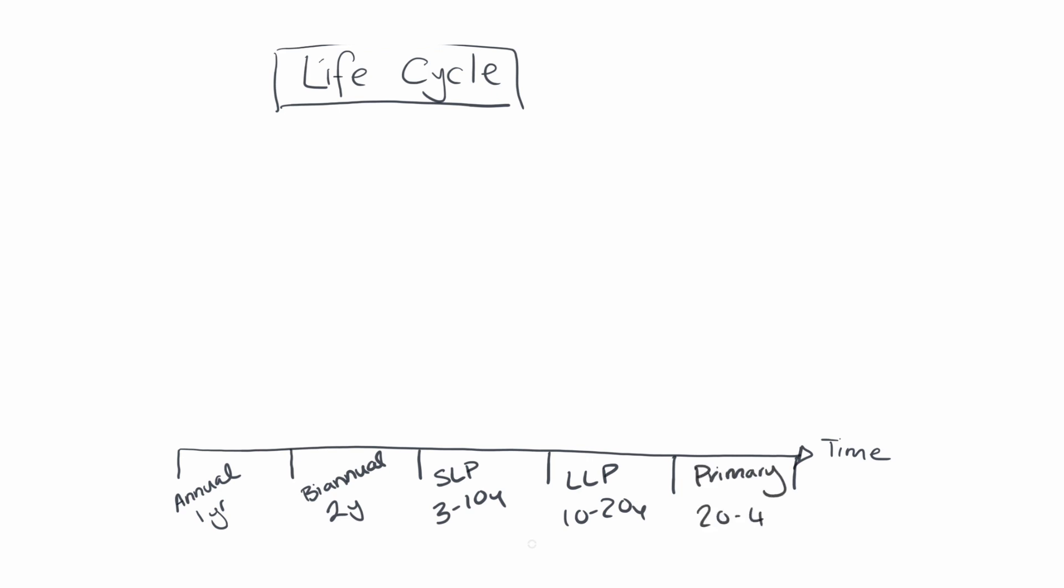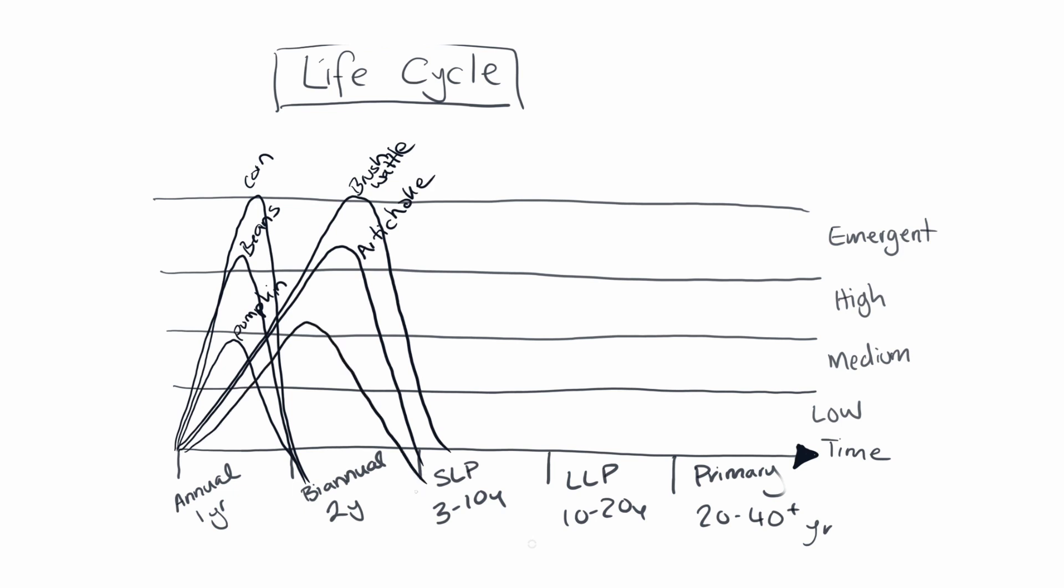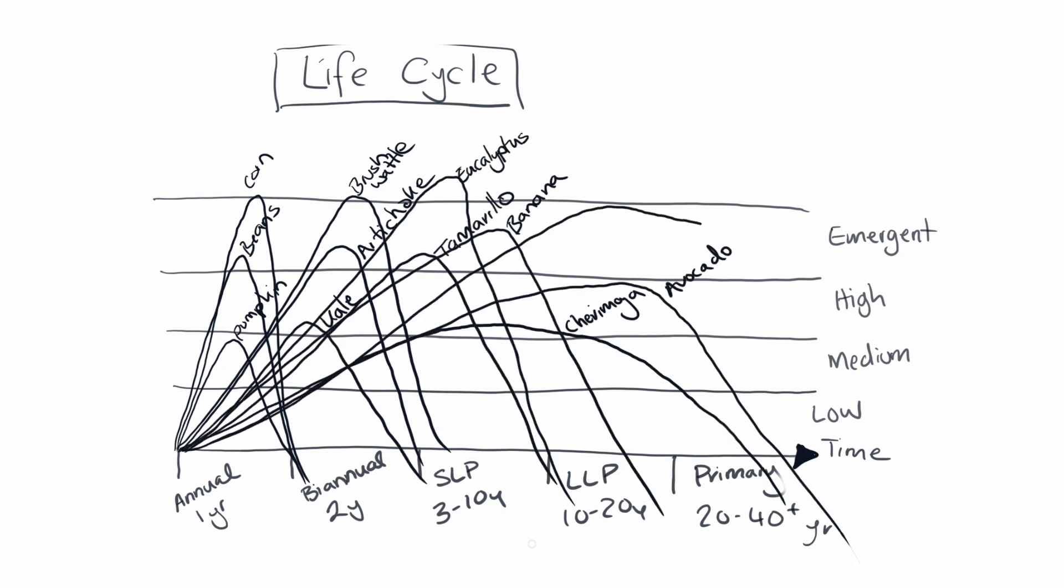Our second principle of Syntropy is life cycle. This we determine as annual, biannual, short-lived perennial, long-lived perennial or primary. And you see the years written down there. This is an example of a degree of density we can get away with when we understand both the strata of the plants and these life cycles. We can create and attain that optimal and functional density and diversity over time and space.